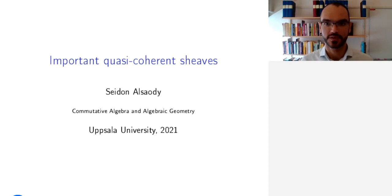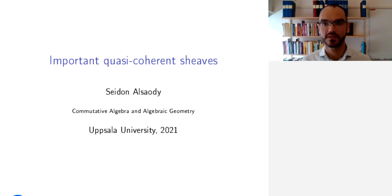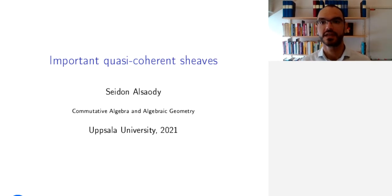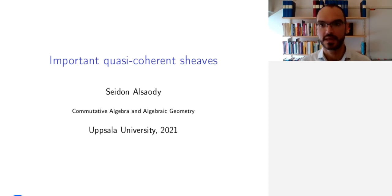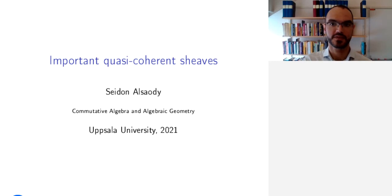Hello and welcome to today's lecture. So far in our study of schemes we have studied sheaves of modules over schemes, and in particular we have seen that the class of quasi-coherent sheaves stands out in being defined in terms of honest modules over an open cover of our scheme. In this lecture we will look at some important examples of and constructions on quasi-coherent sheaves.